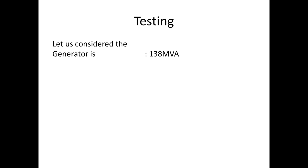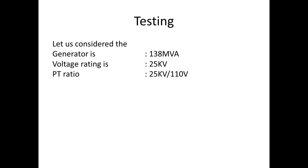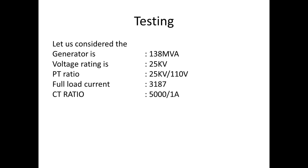Let us consider the generator is 138 MVA, voltage rating is 25 kV, and VT ratio is 25 kV / 110 volt. The full load current of the generator is 3187 amps, and the CT ratio is 5000 / 1 amps. Now we will see the relay settings.